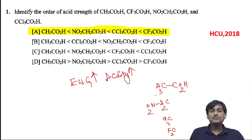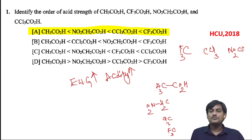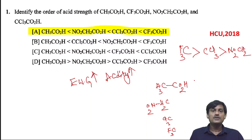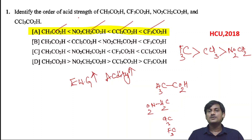If we compare the electron withdrawing nature of these groups — CF3, CCl3, and CH2NO2 — CF3 is the most electron withdrawing group, next is CCl3, and then NO2CH2. So the order will be CF3CO2H > CCl3CO2H > NO2CH2CO2H > CH3CO2H. CF3CO2H has the highest acidity value.